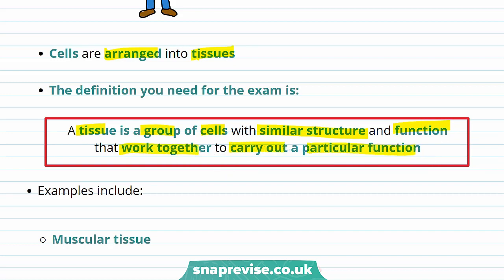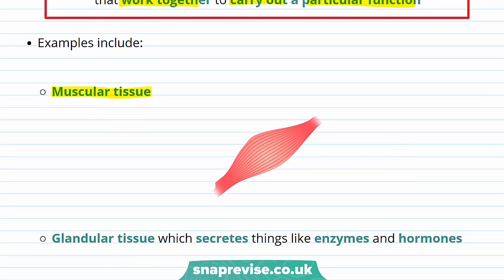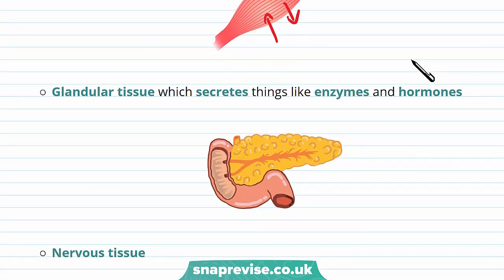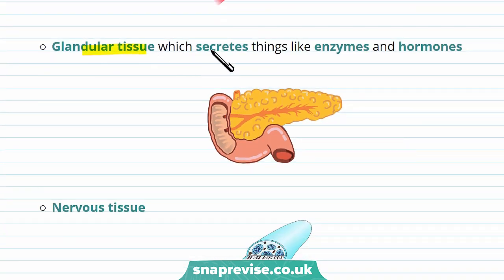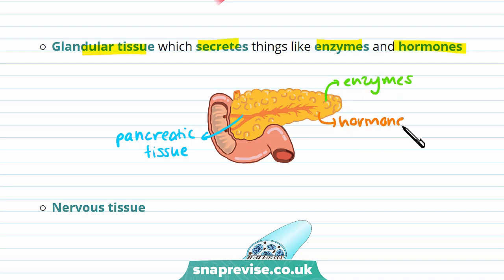Now let's look at some examples of tissues. One example is muscular tissue. Muscular tissue can contract or shorten and relax, and that causes movement. Another example is glandular tissue, which secretes things like enzymes and hormones. One example of a glandular tissue is pancreatic tissue, which secretes enzymes used in chemical reactions and hormones used as chemical messengers.